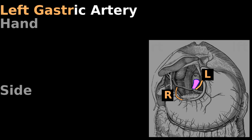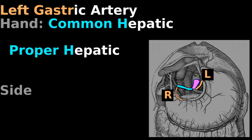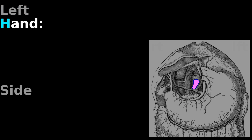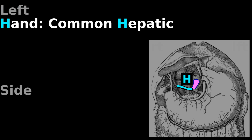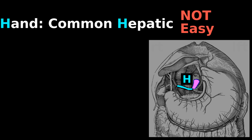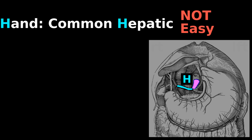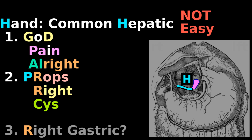The right gastric artery can come off the common or proper hepatic artery, which is covered later. Hand means common hepatic artery, which is not easy, because there are two immediate things which become more eventual things.